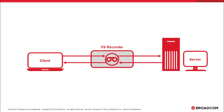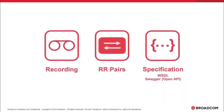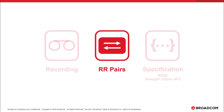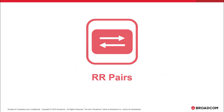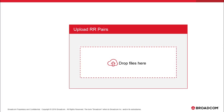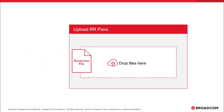Of course, you don't always have access to the live system — that's one of the constraints that we're trying to remove. However, if you have the request and response data, you can create a virtual service without ever accessing the live system. You can just drag the request file and the response file directly into DevTest Portal, and DevTest reads the files and then generates a virtual service based on the data in those files.